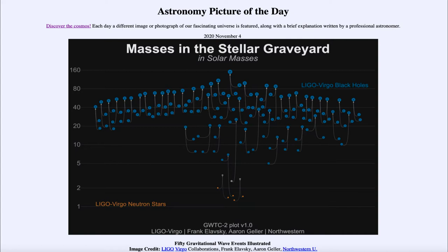It is titled '50 Gravitational Wave Events Illustrated.' This is looking at the first 50 gravitational wave events that have been detected. We've now detected more than this, but here are the first 50 put together to look at what we've been able to see.